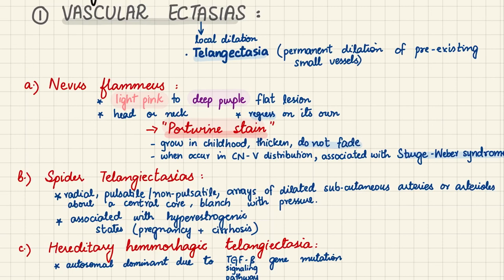When port wine stains occur in the trigeminal nerve distribution, they can be associated with Sturge-Weber syndrome, which involves port wine stains, neurological abnormalities, and eye abnormalities such as glaucoma. If port wine stains occur in combination with neurological and eye abnormalities, Sturge-Weber syndrome should be suspected.